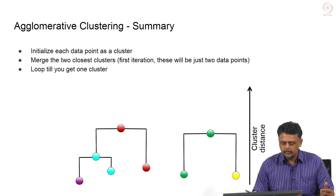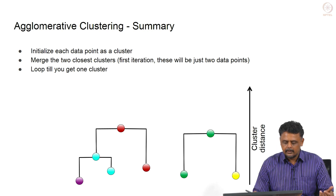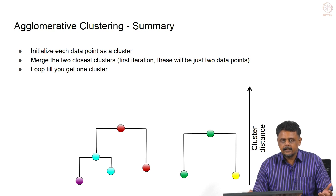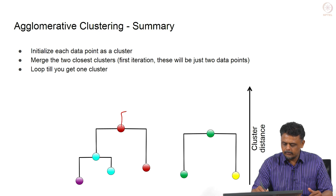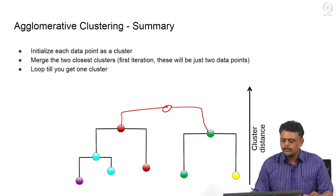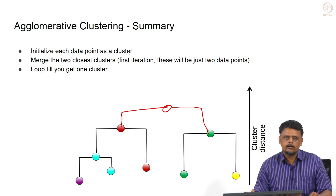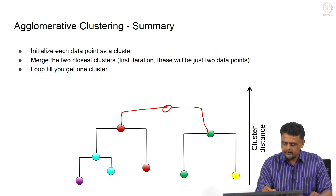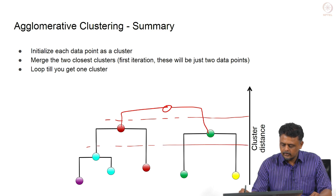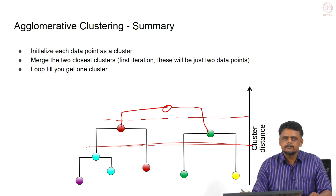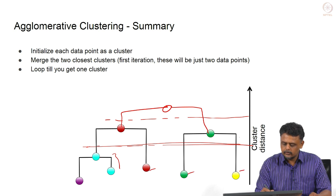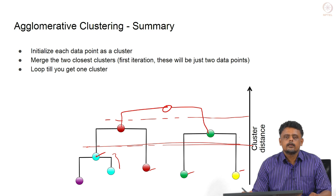To summarize the algorithm itself: initialize each data point as a cluster and merge the two closest clusters, looping until you get a single cluster. It is up to the user to determine the ideal number of clusters by making the cut at whatever level they choose. It makes more sense to cut where there is a large change in the cluster distance — the dissimilarity metric — which in this example gives rise to four unique clusters from the dataset.